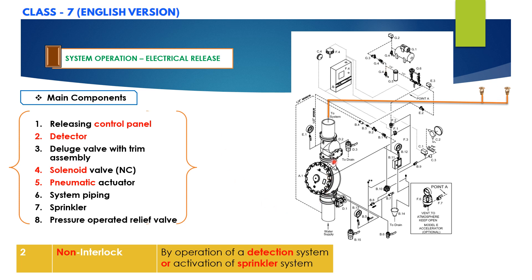In a fire condition, when the detection system operates, the system control panel energizes the solenoid valve to open. Pressure is then released from the priming chamber faster than it is supplied through the restricted orifice. The deluge valve clapper opens to allow water to flow into the system piping and alarm devices. When a sprinkler head opens, water will flow from the system.